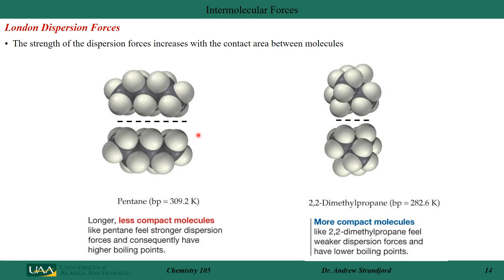Dispersion forces increase with contact area between molecules. Pentane has five carbons and twelve hydrogens with a lot of contact area between molecules, giving a larger dispersion force. 2,2-Dimethylpropane also has five carbons and twelve hydrogens but is more compact, with less surface area and less interaction — so its London dispersion forces are smaller. This is reflected in boiling points: pentane has a higher boiling point because stronger forces between molecules require more energy to go from liquid to gas.